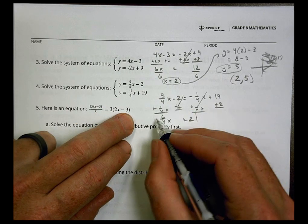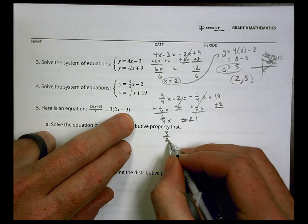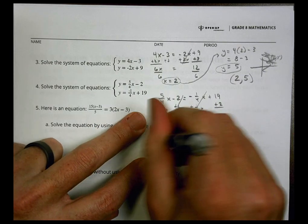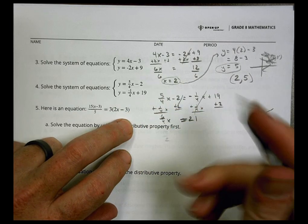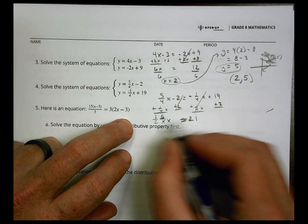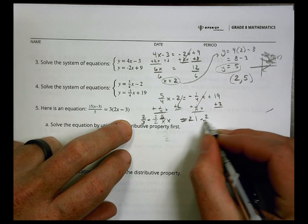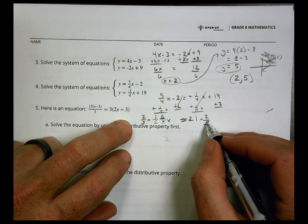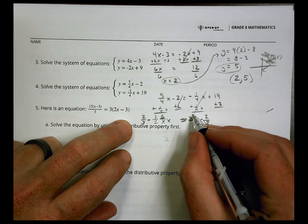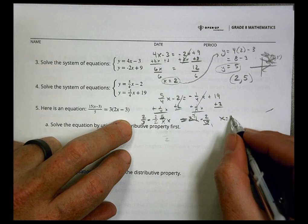We can reduce this. Instead of 6/4, we could call this 3/2. This can become 3/2 x. To get the x by itself, we multiply by the reciprocal, so 2/3. And we can reduce. 3 goes into 21 seven times. 7 times 2 is 14. So x equals 14.